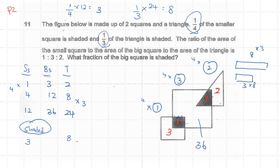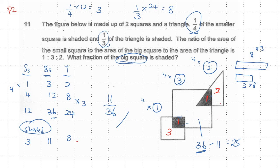For this triangle, 11 is shaded in this big square. The unshaded portion would be 36 minus 25. What I want to know is the fraction of the big square that is shaded: that's 11 over 36. You put 25 because the big square's shaded area is only the small square's shaded area plus the triangle's shaded area — that's all.